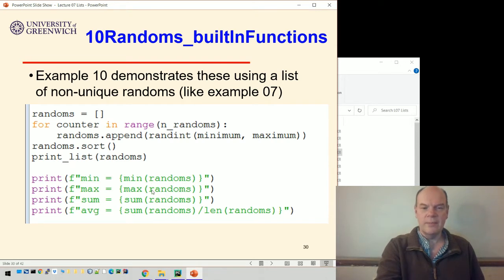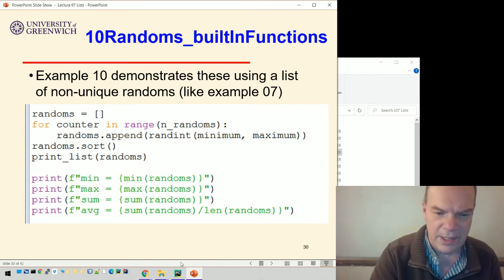And we sort them, and then we print them out. Then we can do things like find the minimum value in that list, we can find the maximum, the sum, and if we want the average, we take the sum divided by the length. Notice I've used the F function here. So what does this do? It calculates the minimum value and then prints that into the 'min equals' as the value.